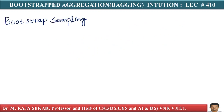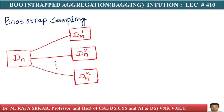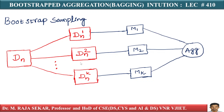When we perform bootstrapped sampling — the key idea of bagging — our total dataset D_n is sampled to get D_n1, D_n2, and so on up to D_nk. On each of these datasets we create models M1, M2, through Mk. Then we perform aggregation. This is how the bagging pipeline works.